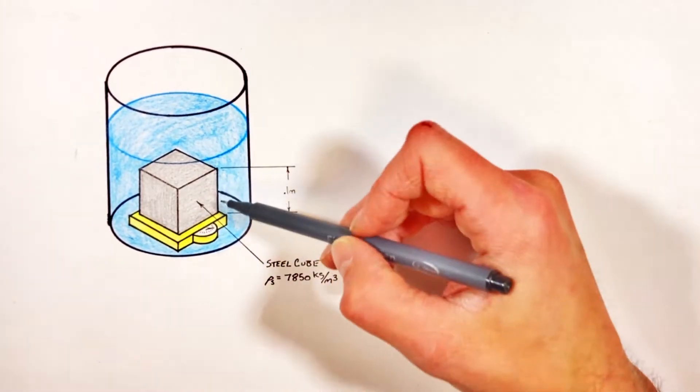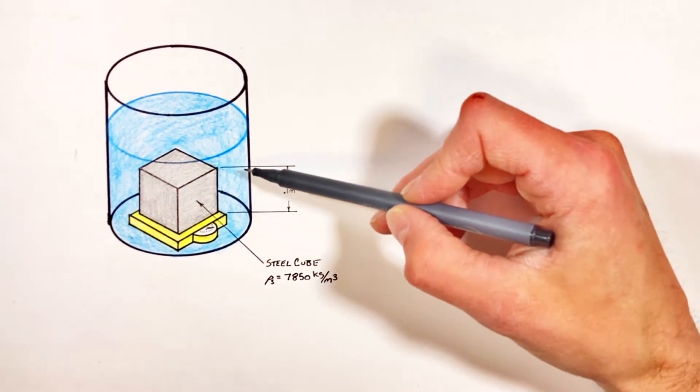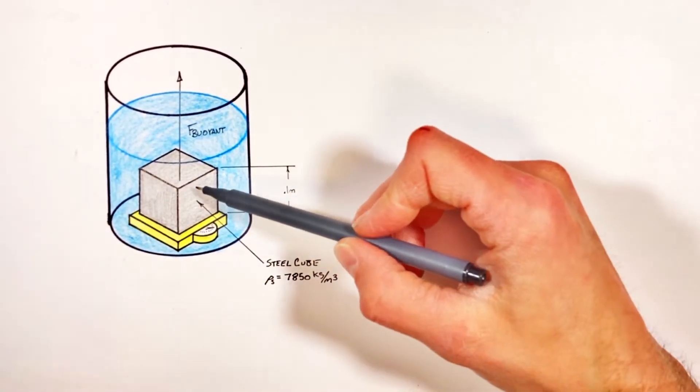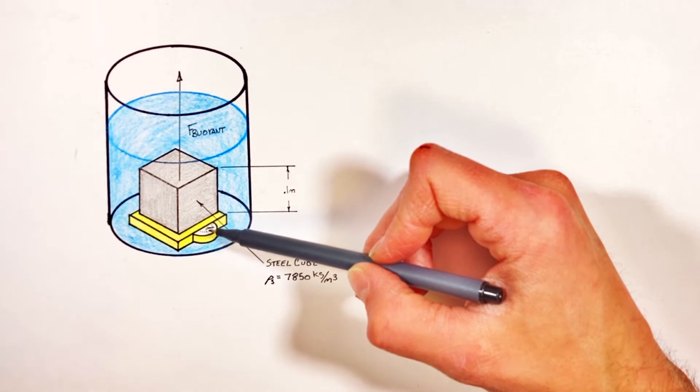See, the scale isn't just going to read the weight of the block. The issue in this problem is that because the steel cube is submerged in the water, there's a buoyant force acting upward on this block, and that buoyant force is going to affect the reading of the scale, which is effectively reporting not the actual weight of the block but the normal force on the block.